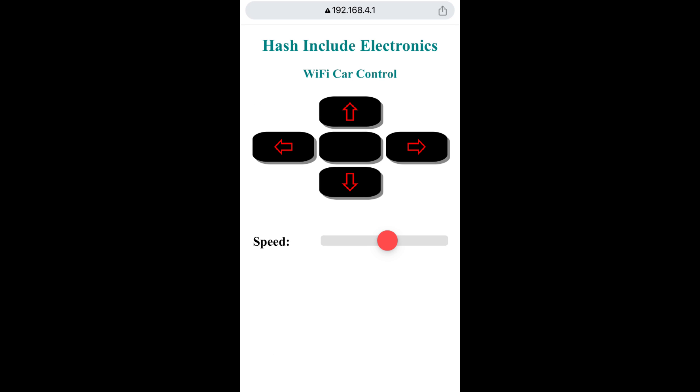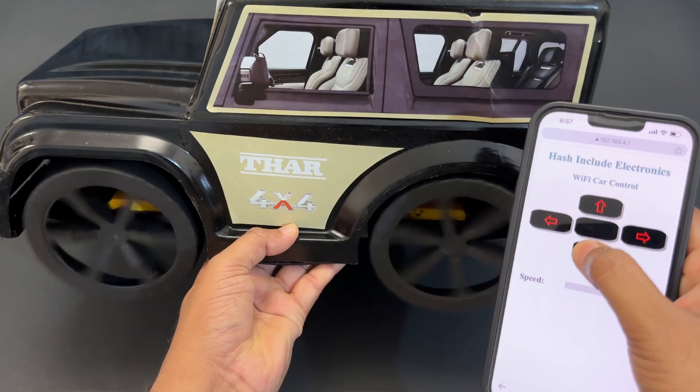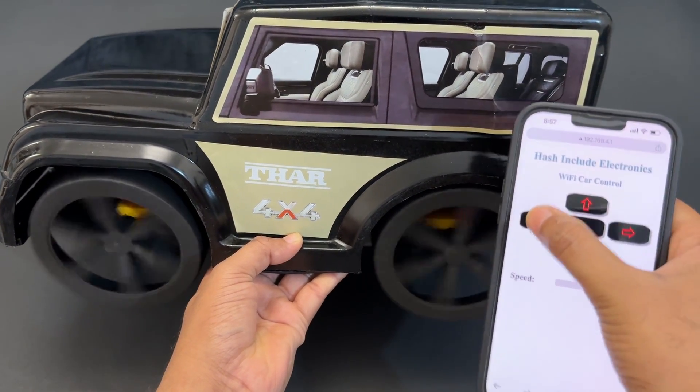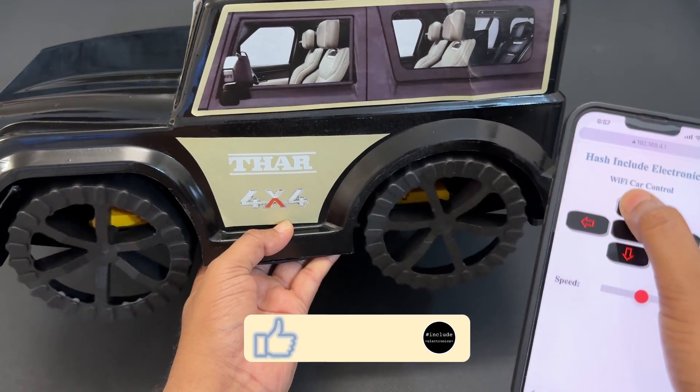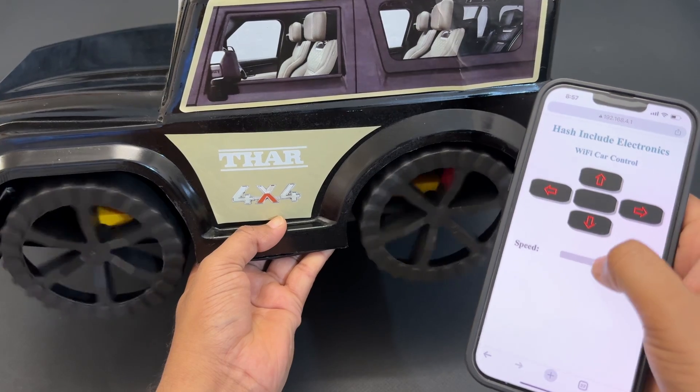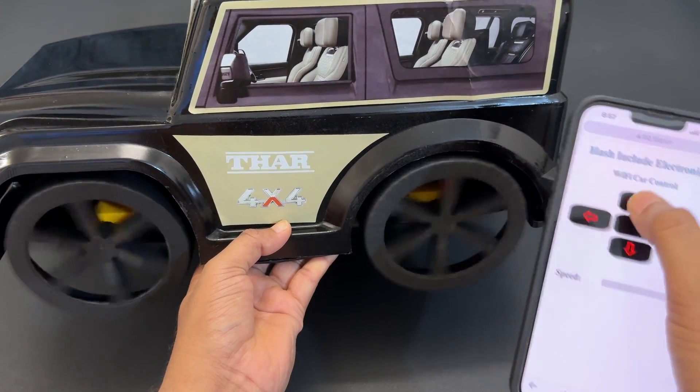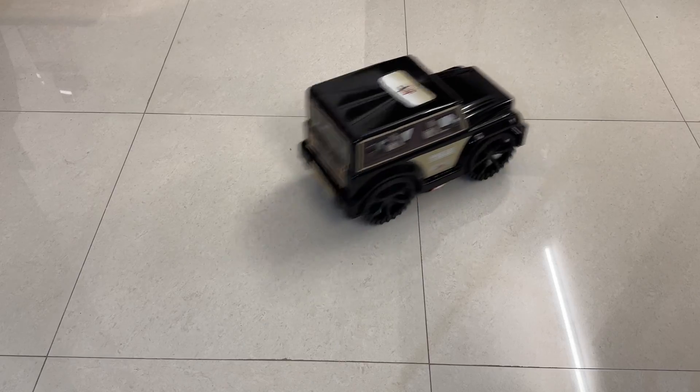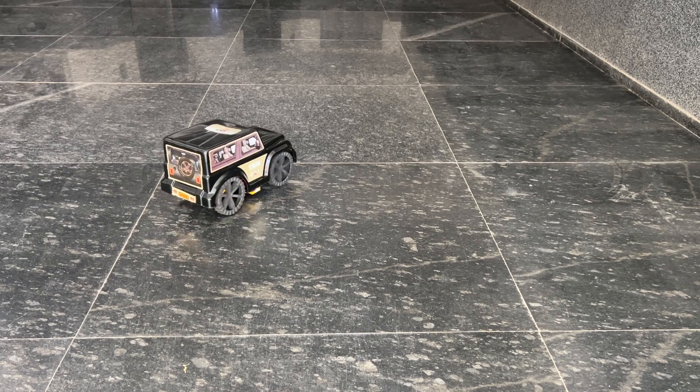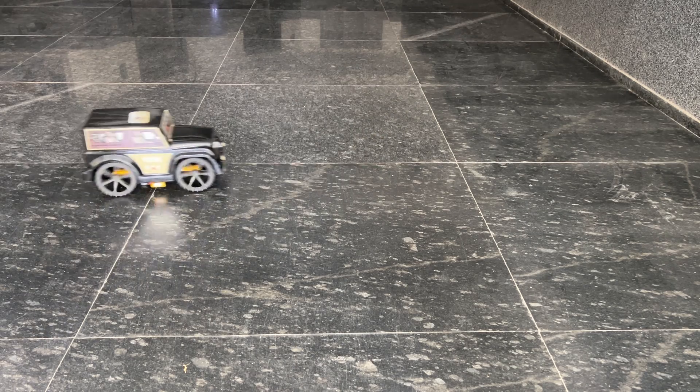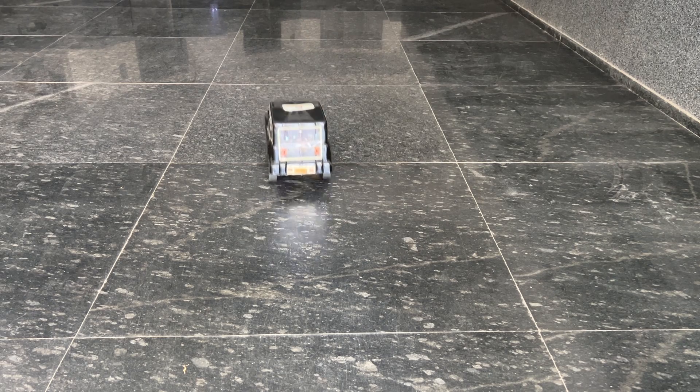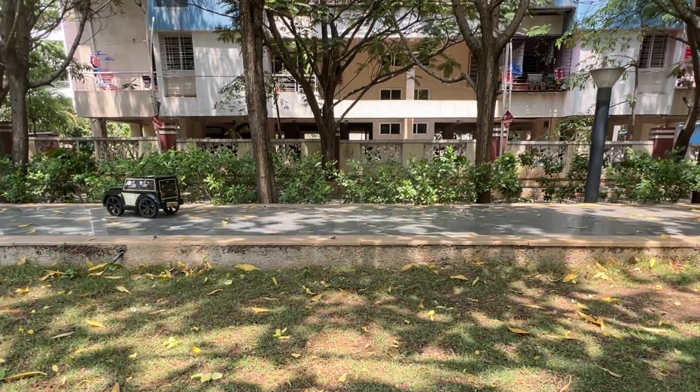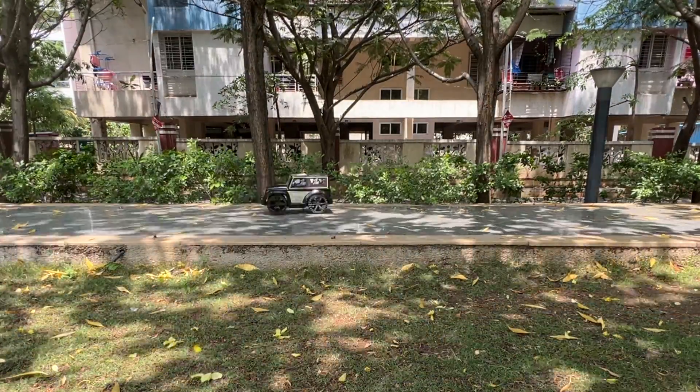It will open our car control app. That's it! Let's see how it works. You can use these arrow buttons to move the car. You can adjust the car speed using the speed control slider. And here we go!